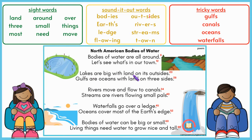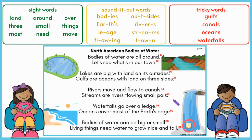Lakes are big with land on its outsides. Gulfs are oceans with land on three sides. Rivers move and flow to canals. Streams are rivers flowing small piles.